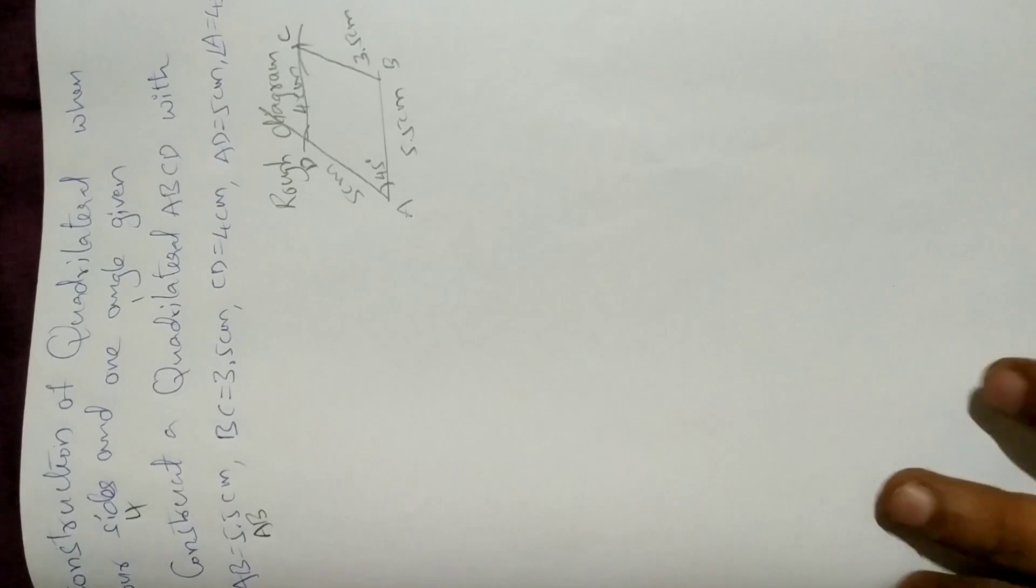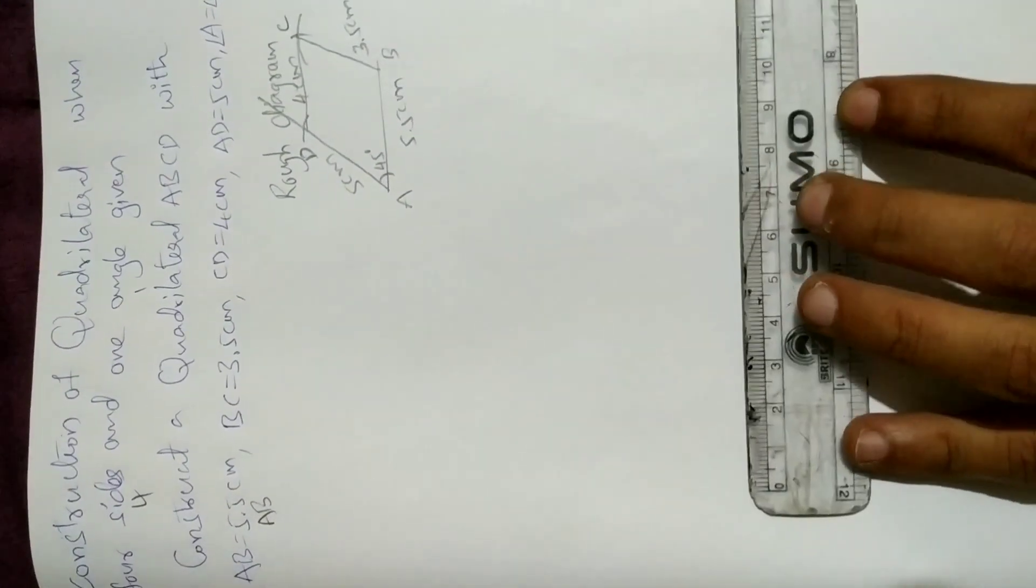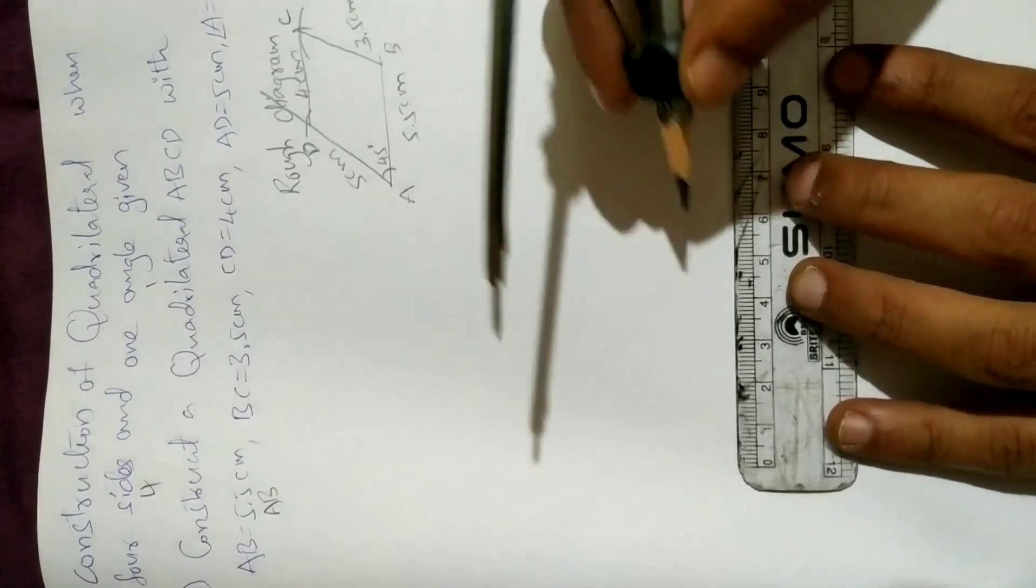Now let's start the construction. So first one is AB, 5.5 centimeters baseline. So let's draw AB 5.5 centimeters baseline.